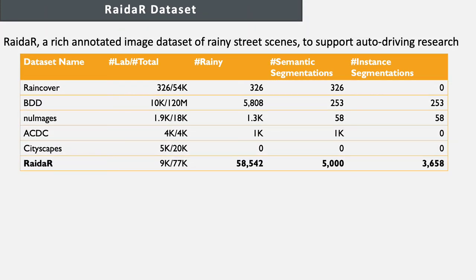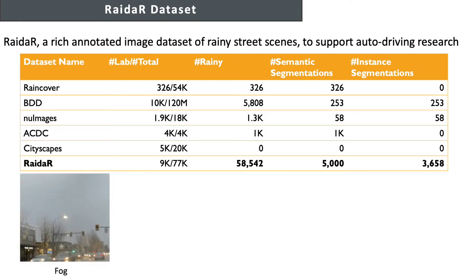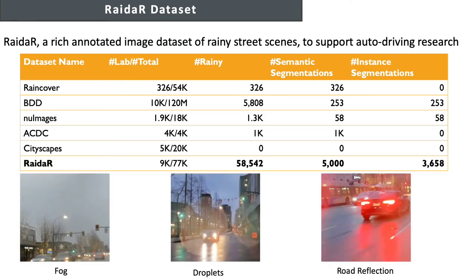Thus, we introduce RADAR, a rich annotated image dataset of rainy street scenes to support autonomous driving research. RADAR contains the largest number of rainy images: 5,000 of which provide semantic segmentations, and 3,658 provide object instance segmentations. RADAR images cover a wide range of realistic rain-induced artifacts, including fog, droplets, and road reflections.